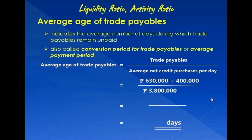Let's place those figures in our second formula. Notice, however, that what we need as denominator is the average net credit purchases per day, not the net credit purchases for the entire year 2022. And therefore, we must divide this amount by 360 days to get the daily average.